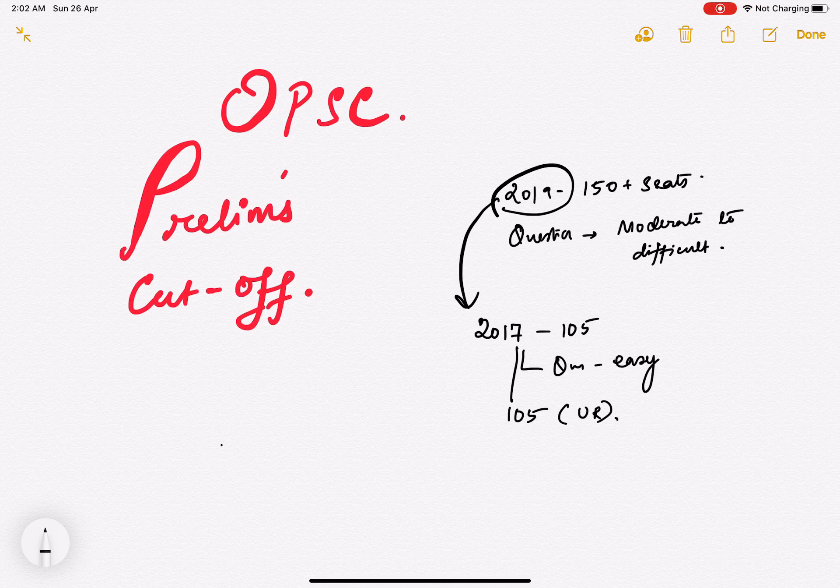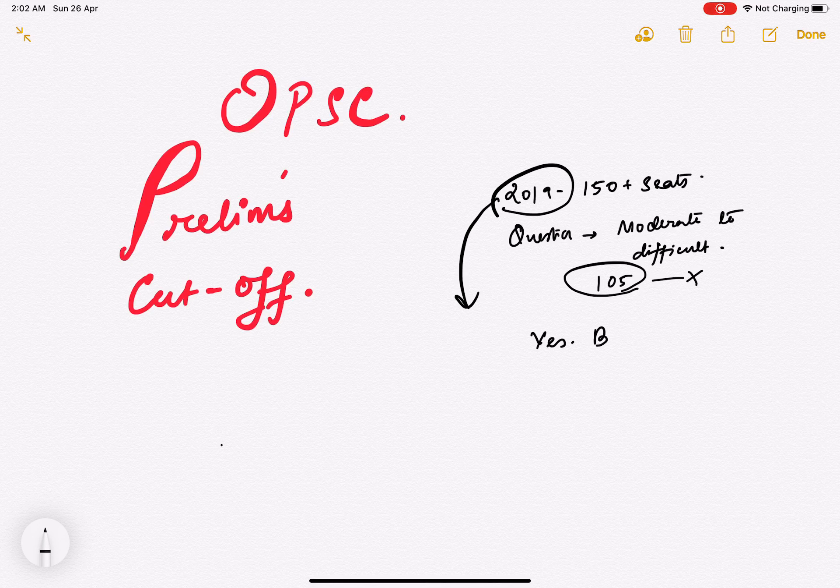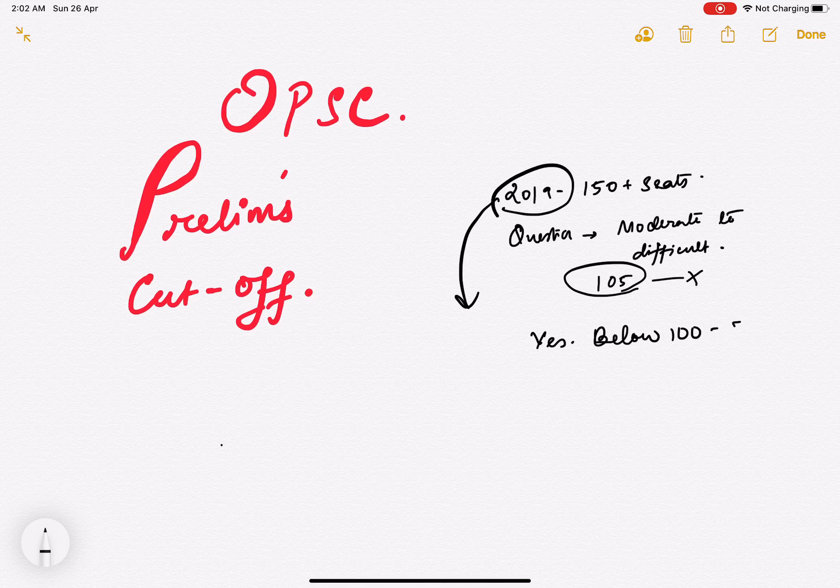During 2017 itself, the cutoff was almost at 105 for the general candidate. Now in this context of 2019, the cutoff is not going to be 105 obviously. If we analyze, will the cutoff come down, will it be below 105? Yes, 100%. Below 100 I would say 70% - more than 70% chances are that it will be below 100.